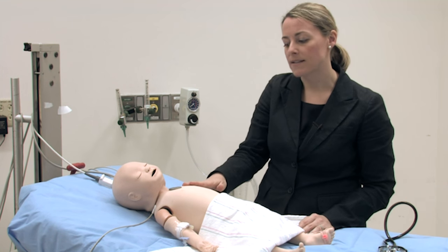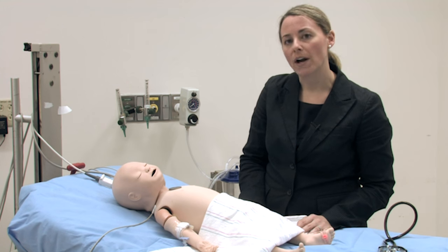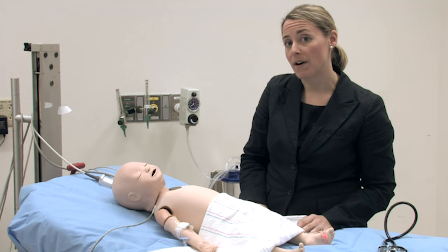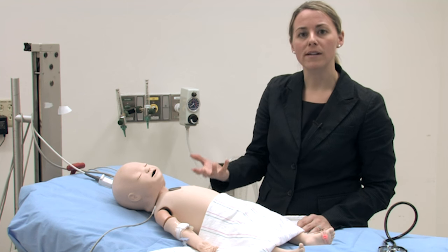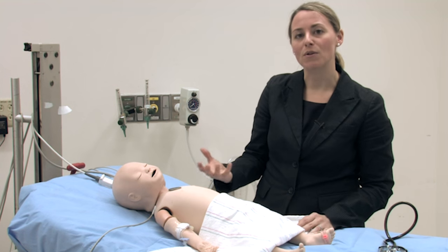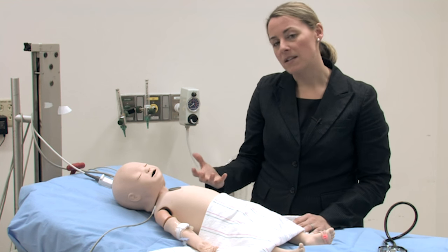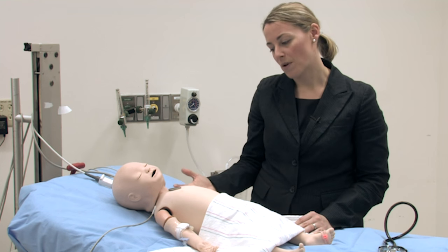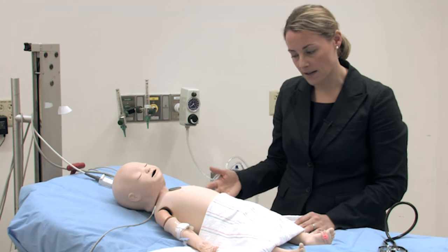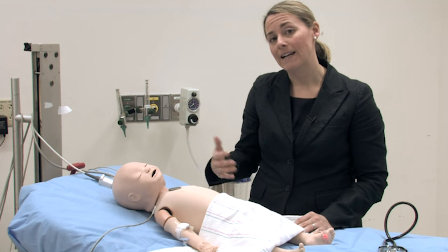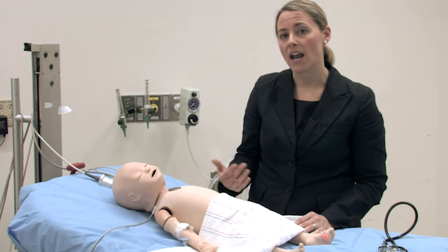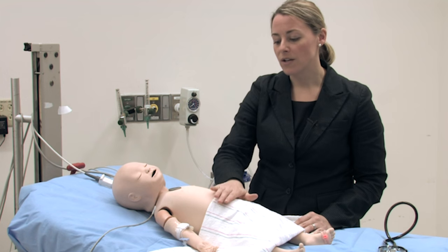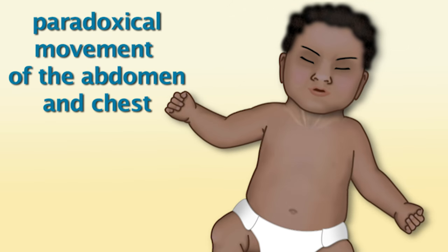A patient that has a quiet chest with really no air entry should make you very worried. A patient with a lot of wheezing but good air entry should make you less nervous, because this means the patient is at least able to move air in and out of their chest. A patient without air entry and no audible wheezing is not moving very much air at all and likely has impairment of oxygenation and/or ventilation. You can also look at the abdomen to see if there is paradoxical movement, indicating the diaphragm is working very hard to assist breathing.